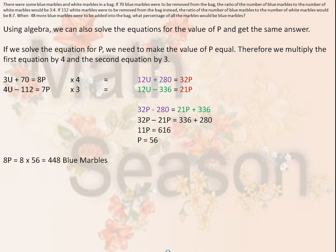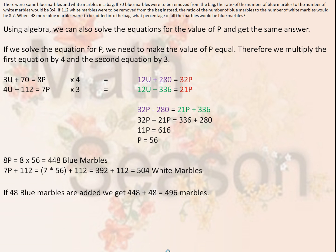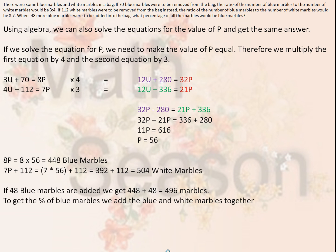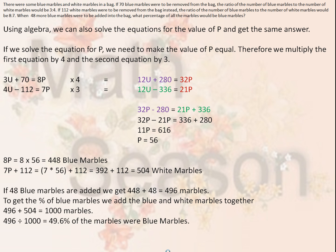With p equals 56: blue marbles equal 8p equals 8 times 56 equals 448. White marbles equal 7p plus 112 equals 392 plus 112 equals 504. Adding 48 blue marbles gives 448 plus 48 equals 496. Adding blue and white together gives 1000 total marbles, and we end up with the same answer of 49.6%.